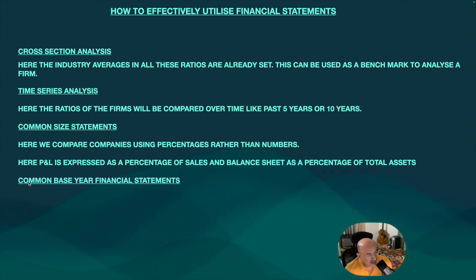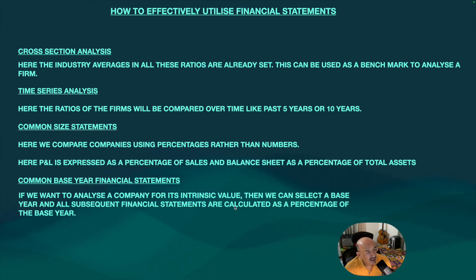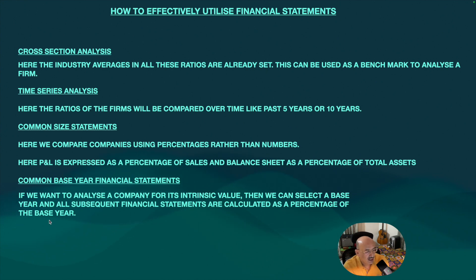Another method is the common base year financial statement. A base year — 5 or 10 years ago — is identified, and all subsequent financial statements are calculated as a percentage of that base year. Every profit and loss and balance sheet value is divided by the corresponding base year value to get a percentage. This is known as common base year financial statements.